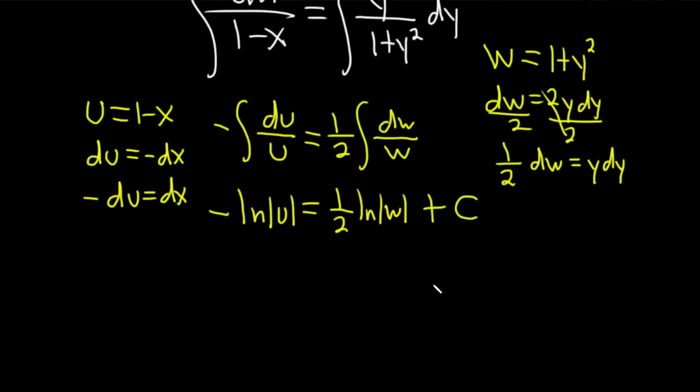And that's almost it. But u is 1 minus x, so let's go ahead and write that. So this is ln 1 minus x equals 1 half ln, and then w was 1 plus y squared. 1 plus y squared plus c.